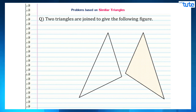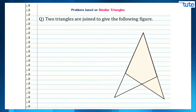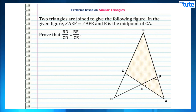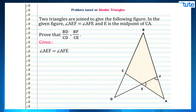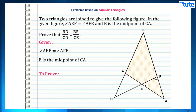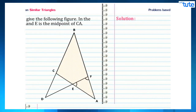Now let us look at the second problem. In this problem, two triangles are joined to give the following figure. In the given figure, angle AEF = angle AFE, and E is the midpoint of CA. We have been asked to prove that BD/CD = BF/CE.